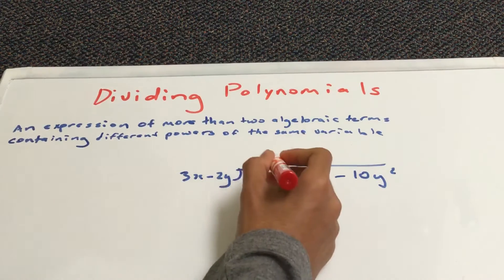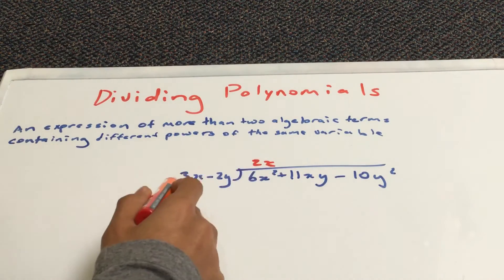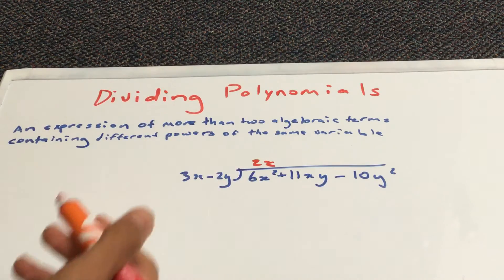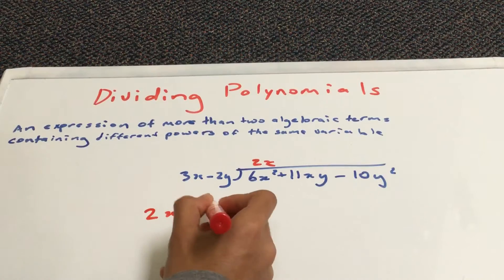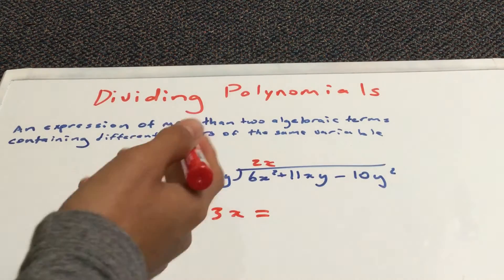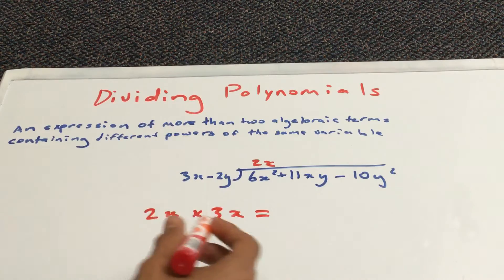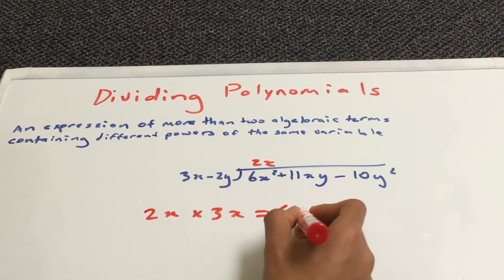And, it's always a good idea to check sometimes. You take the result you got and times it by the divisor. So, 2x times 3x. And if you successfully get 6x squared, you know what you've put at the top is correct. So, 2 times 3 is 6. And then, x times x, x squared.